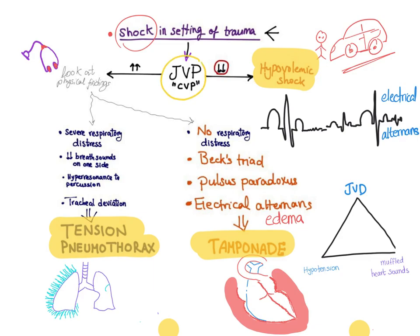If the jugular venous pressure is decreased, that's hypovolemic shock — this patient is bleeding. However, if the jugular venous pressure is increased, you need to look at the physical findings to differentiate further. The bleeding may be external hemorrhage or internal hemorrhage.